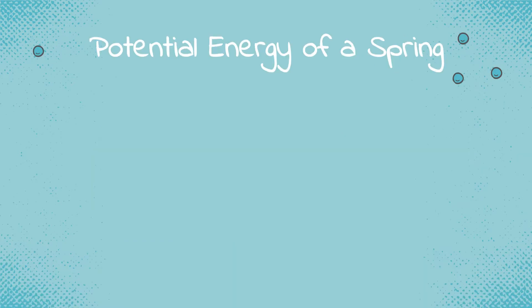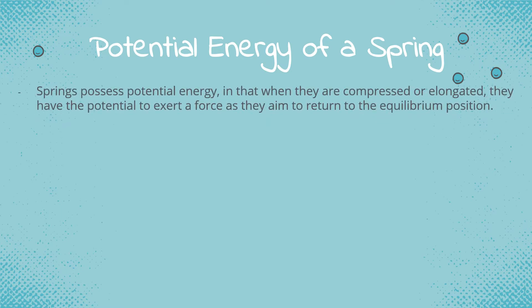Another form of potential energy is the energy that can be found in a spring. When we compress a spring — pushing the ends together — or elongate a spring — pulling it apart — the spring will have the potential to exert a force, as it aims to return to its equilibrium position. The equilibrium position refers to the undeflected position, where no forces are acting on the spring.